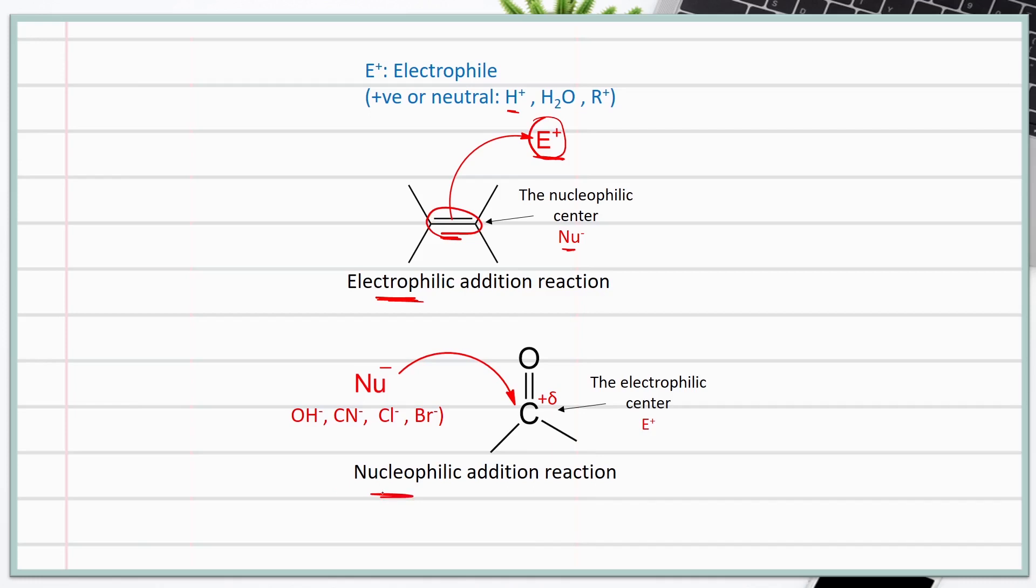nucleophilic addition reactions happen with compounds containing polar bonds, such as carbonyl bonds. The carbon of the carbonyl group is partially positive due to the electronegativity difference between oxygen and carbon, which makes it susceptible to attack by a nucleophile,